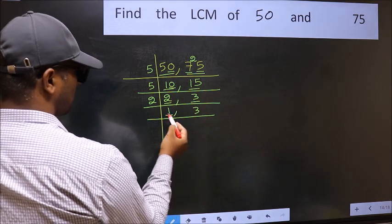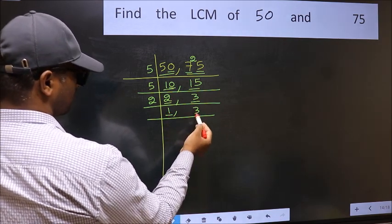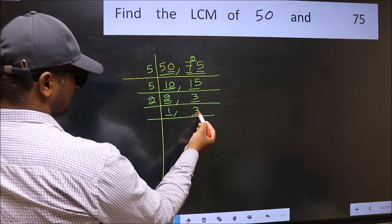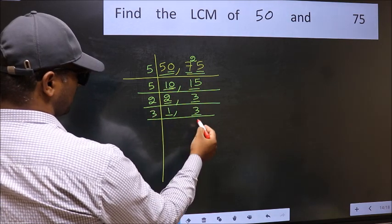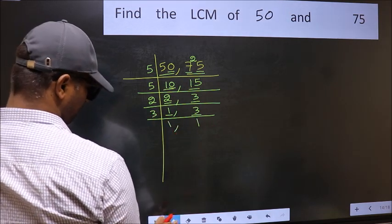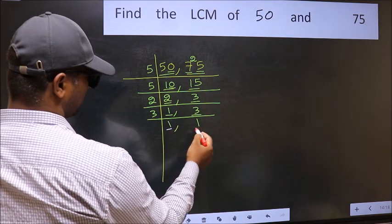Now we got 1 here. So focus on the next number 3. 3 is a prime number, so 3 once is 3. So we got 1 in both the places.